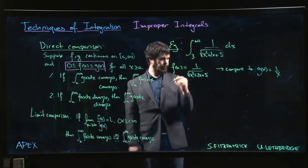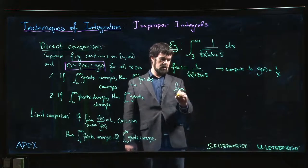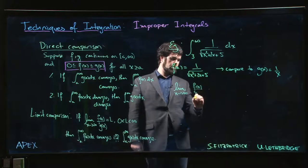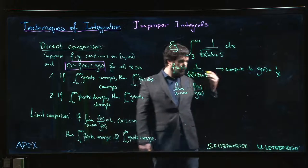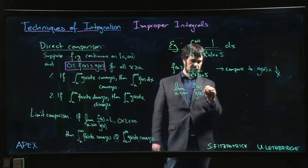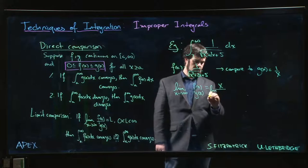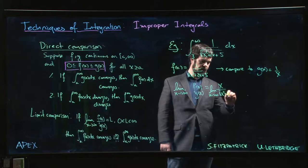Dividing by g of X is like dividing by 1 over X, which is like multiplying by X. So we get the limit as X goes to infinity of X over the square root of X squared plus 2X plus 5. Let's rewrite this as the limit...